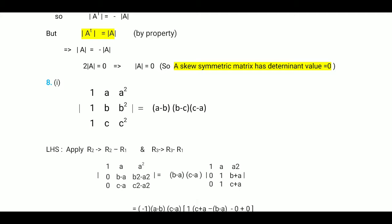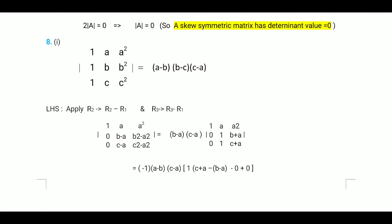We have a determinant with elements 1, a, a²; 1, b, b²; 1, c, c², and we have to prove it equals (a minus b)(b minus c)(c minus a). We take the left hand side. Our method will be to use properties and make maximum zeros. We fix R1 and apply R2 becomes R2 minus R1, and R3 becomes R3 minus R1, to make 0 in place of 1.